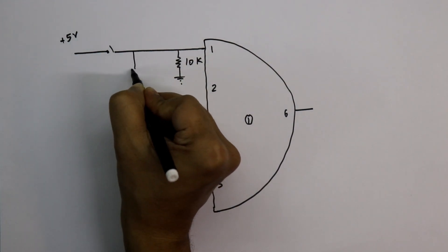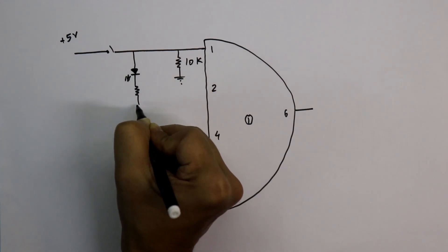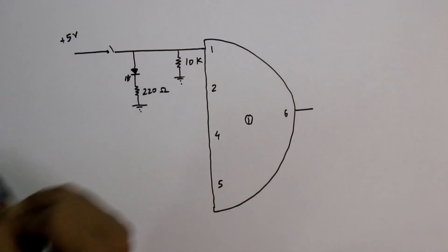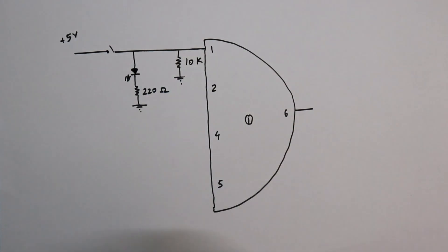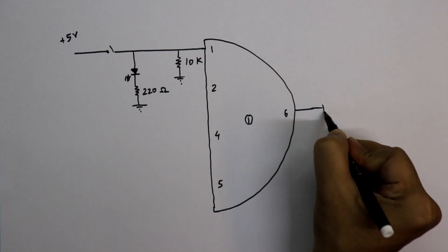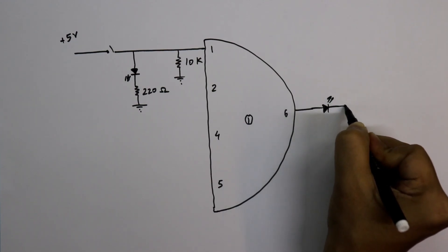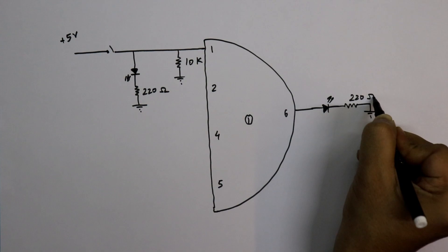To see the input we have to connect LEDs, its value is 220 ohms. So this is the one pin connection and we have to do this to all of them. Now to see the output again we have to connect an LED, the value is 220 ohms.